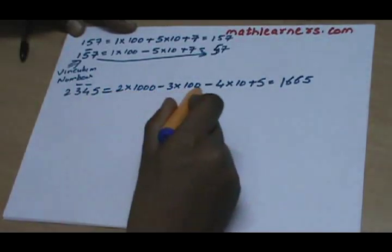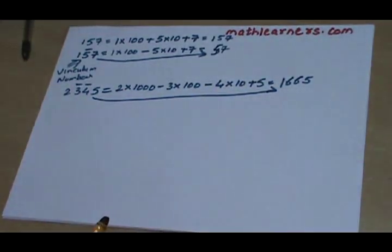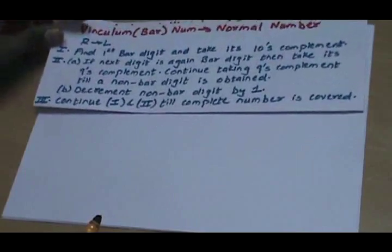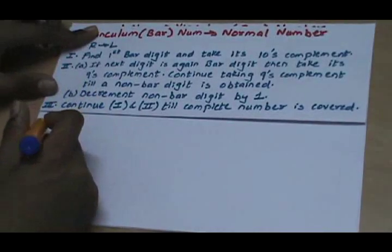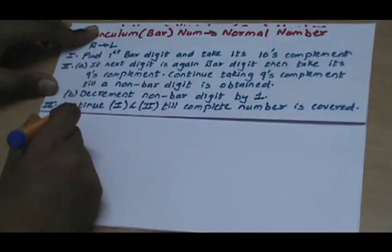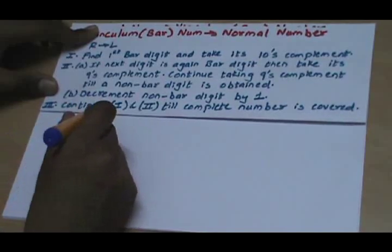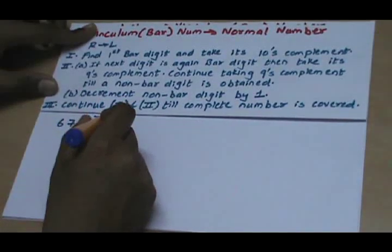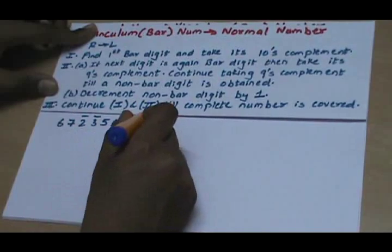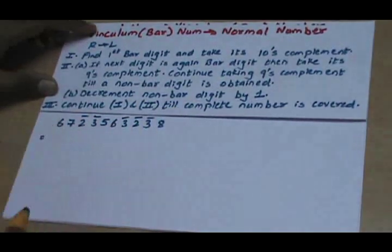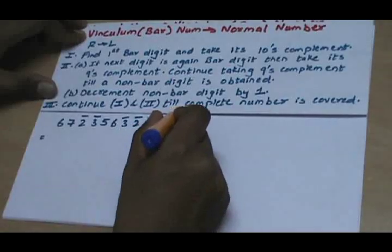We can skip the place value expansion step and directly convert a Vinkalam number to a normal number using a procedure. Suppose we have the Vinkalam number 6, 7, 2̄, 3̄, 5, 6, 3̄, 2̄, 3̄, 8. We want to convert this to a normal number, so we follow the procedure from right to left.